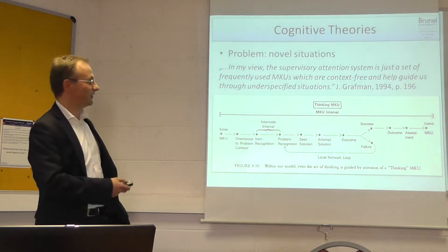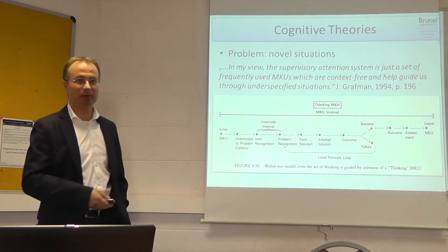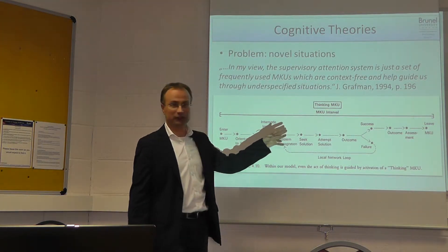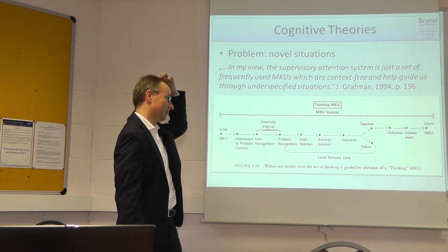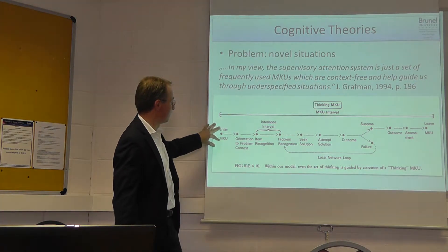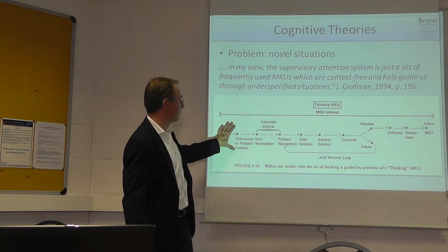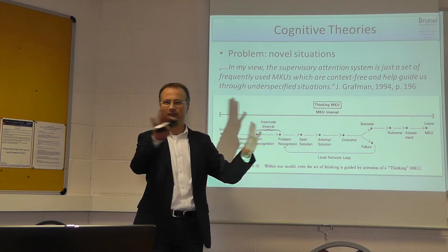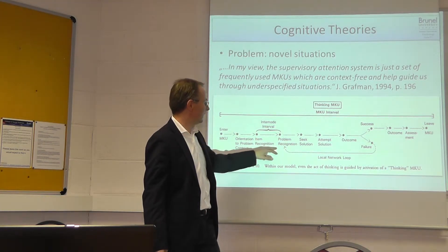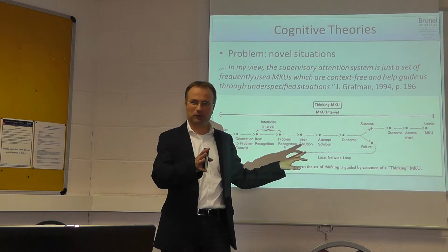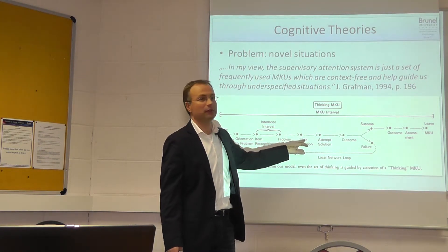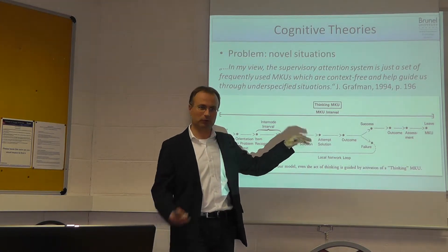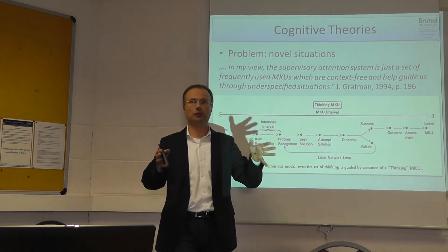He says even thinking is described by such an MKU. This is an example of a thinking MKU — how can we represent it in a very abstract way? When you start this unit, you orient towards the problem context. You recognize the items — what is available for information. You recognize the problem you have to solve. You seek a solution, and that probably branches down into how exactly you seek a solution.